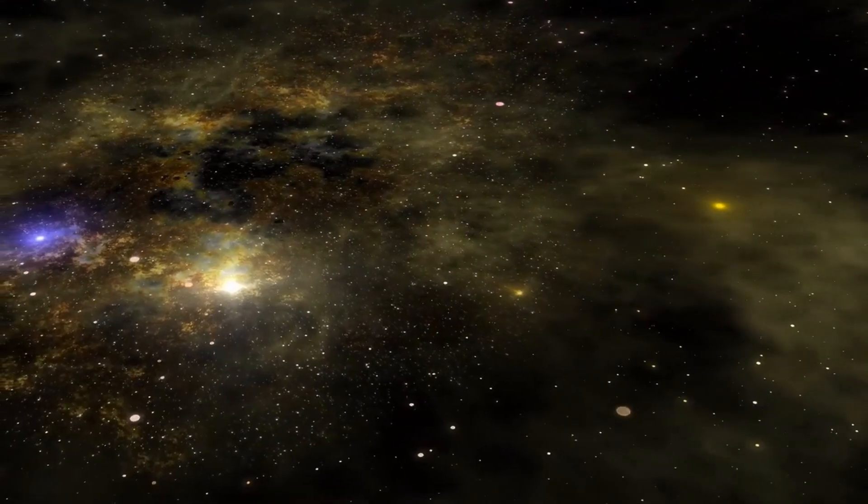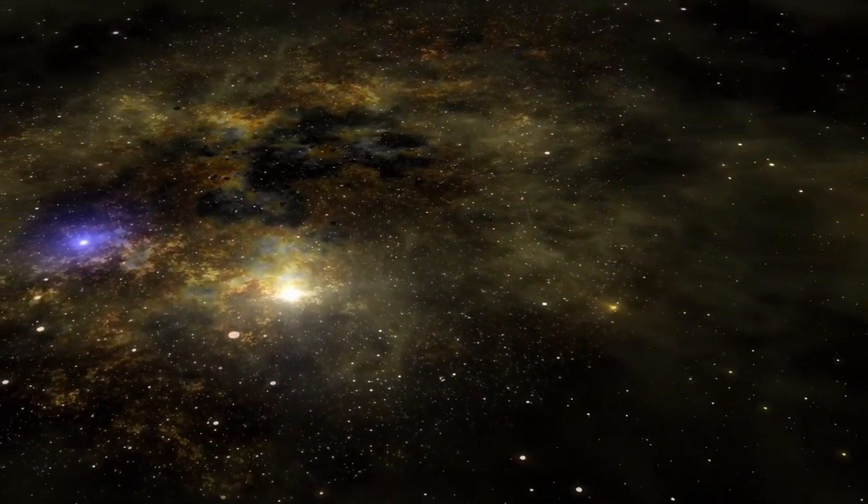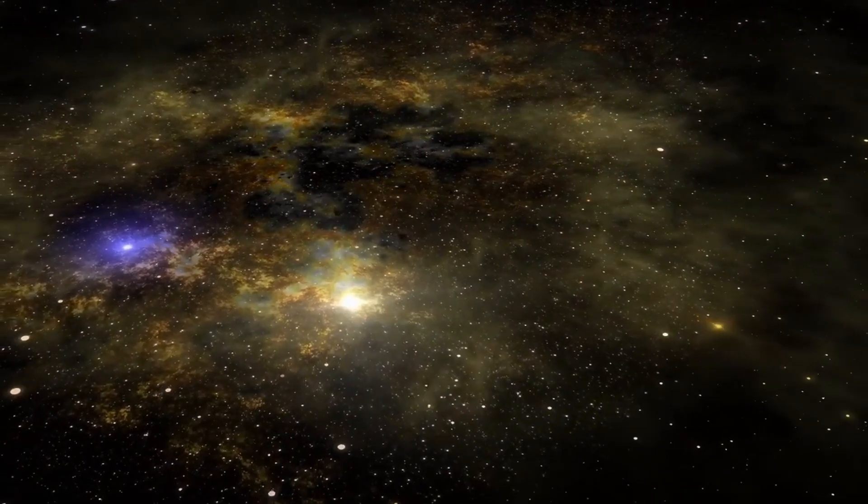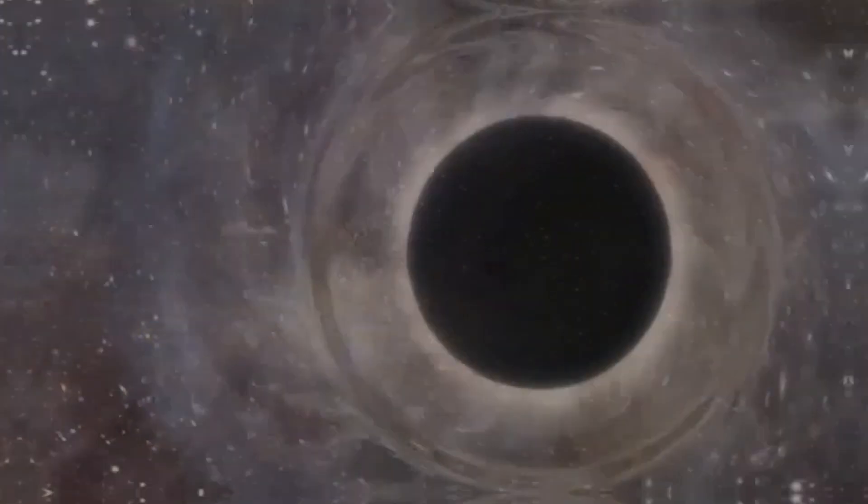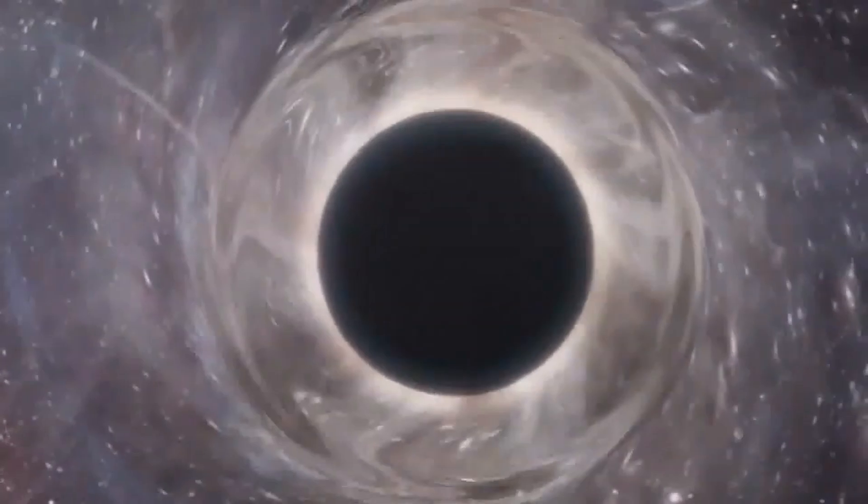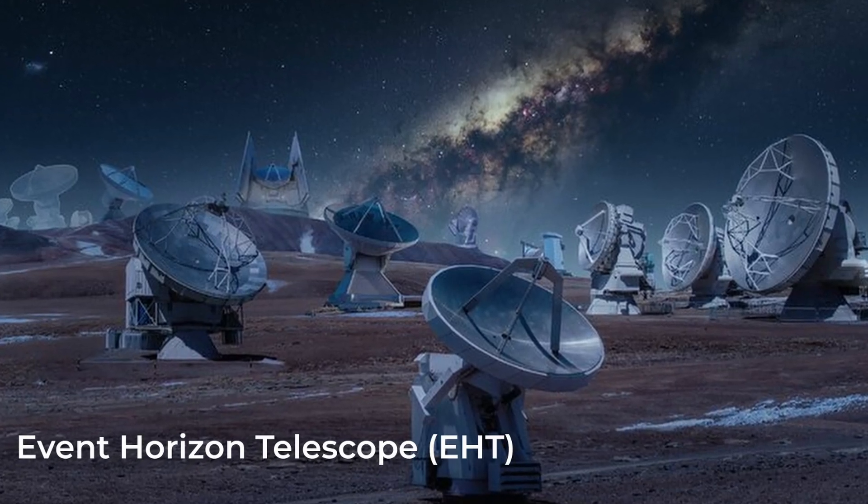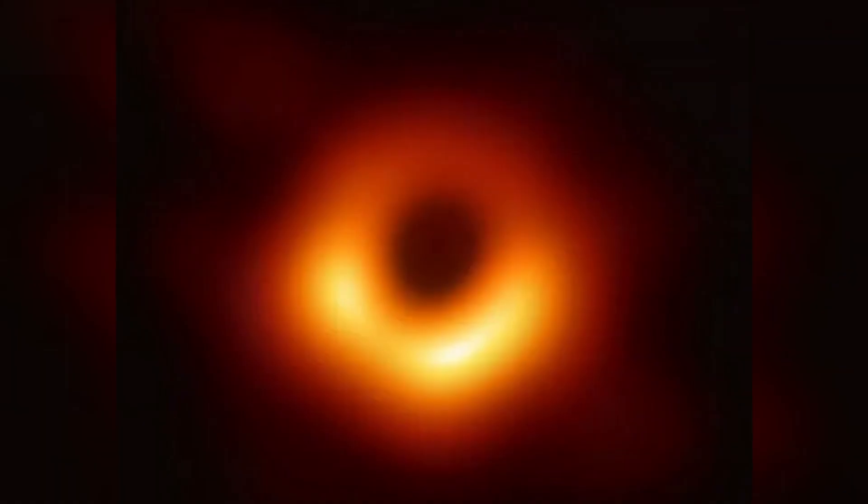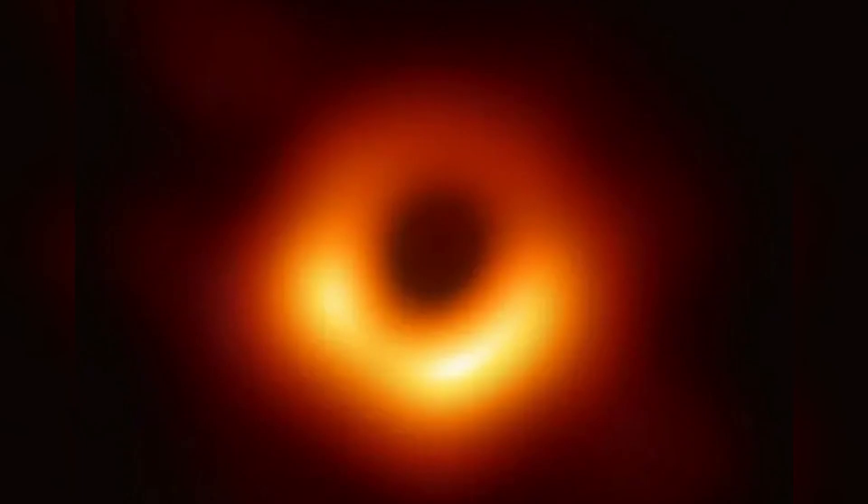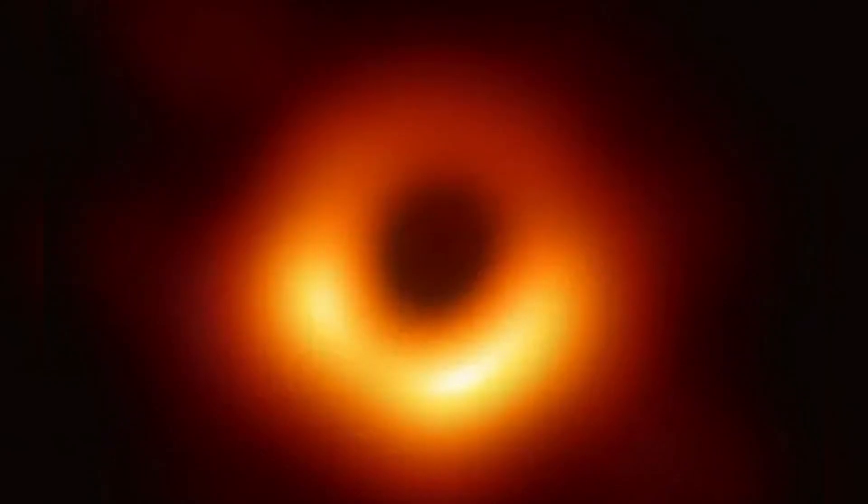Black holes cannot be observed directly like stars or other celestial objects. Instead, astronomers detect the radiation emitted as dust and gas are drawn into the black hole. However, supermassive black holes at the centers of galaxies can be shrouded by thick dust and gas. In 2019, the Event Horizon Telescope collaboration released the first ever image of a black hole. This image of the black hole at the center of galaxy M87 mapped the sudden loss of photons around the event horizon. This groundbreaking image opened new avenues of research.